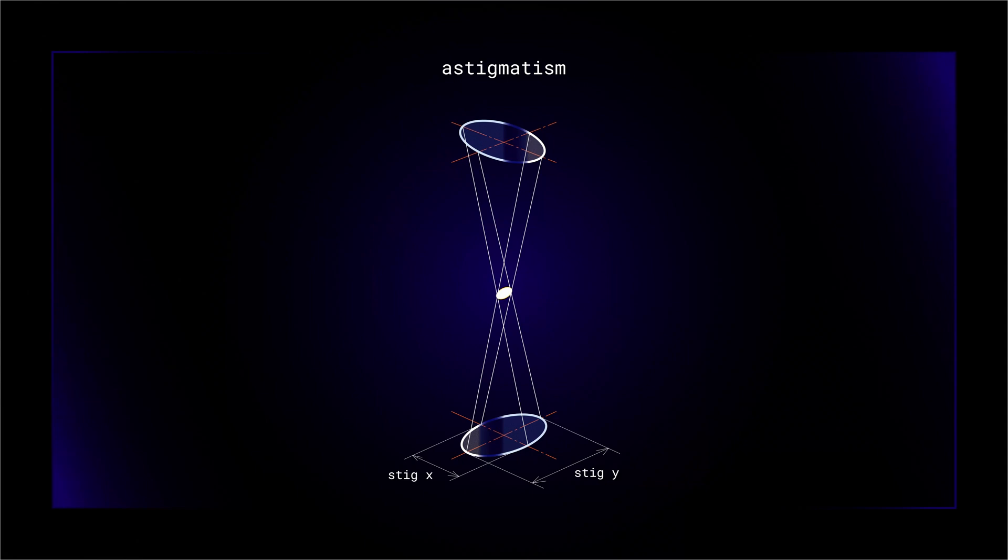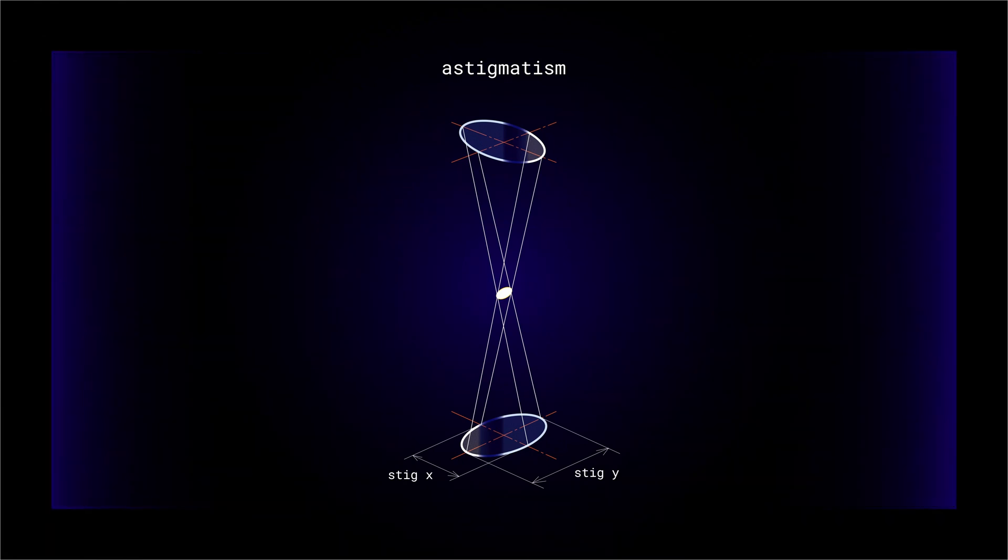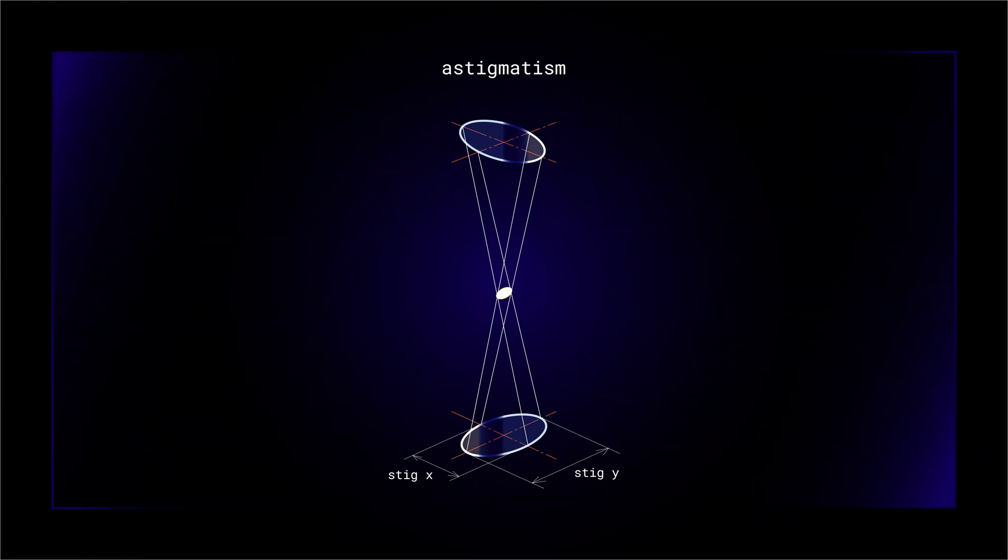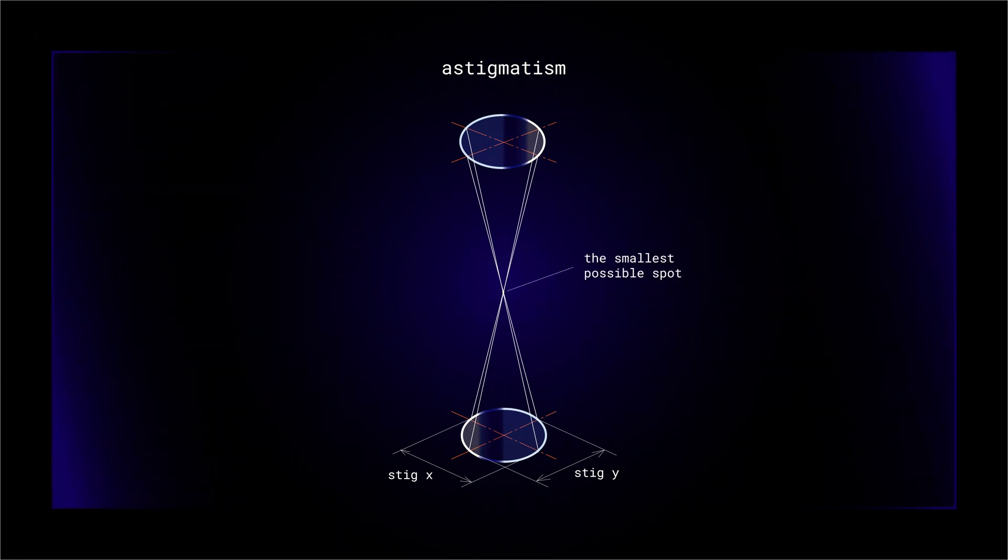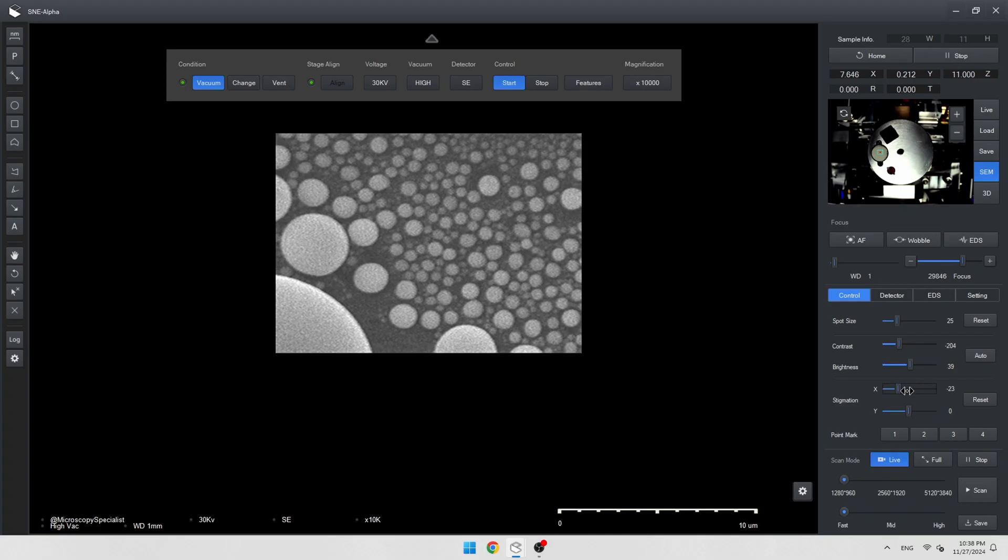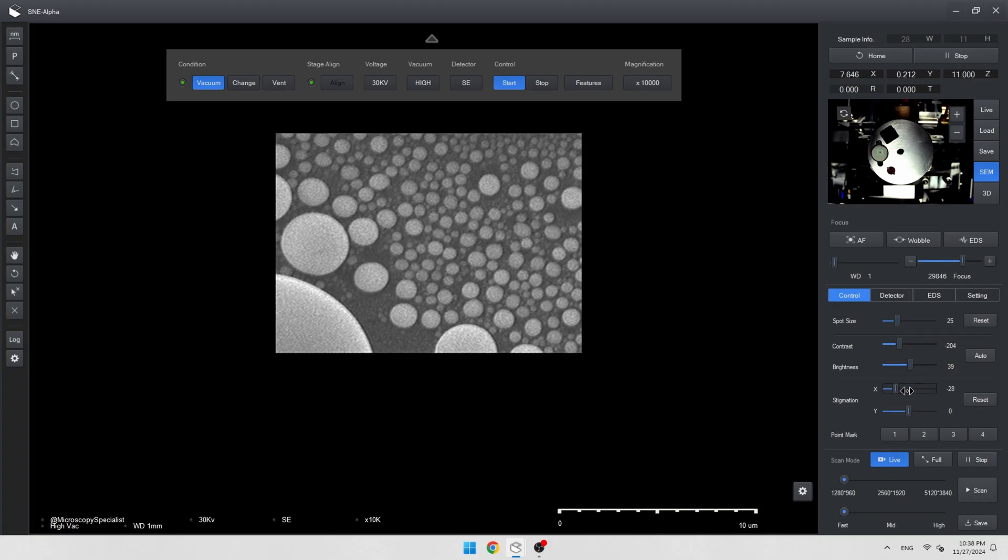Second point. Stigmation. We need to correct the astigmatism of the beam using the stigmator. The main idea is to make the image sharp on both axes without blur. We should clearly see round spheres. It's a tricky thing and we need to spend more time for obtaining the results.